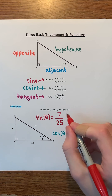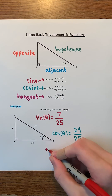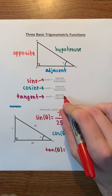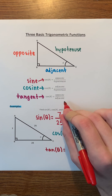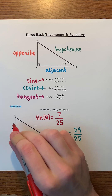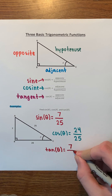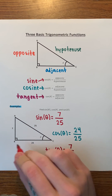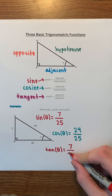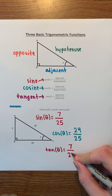Lastly, let's find tangent of theta, which remember is opposite over adjacent. The opposite side has a length of 7, and the adjacent side has a length of 24. So tangent of theta is 7 over 24.